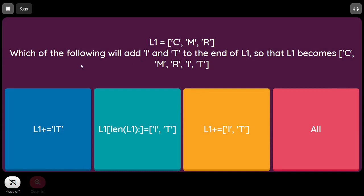L1 = 'CMRI'. Which of the following will add 'I' and 'T' to the end of L1 so that L1 becomes 'CMRIT'? L1 + 'IT' concatenates the elements. Another option performs concatenation after the length. Another adds list 'IT' to the existing list. So all these options perform this concatenation.